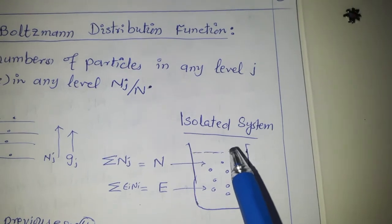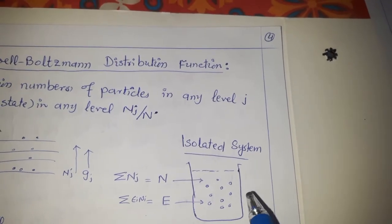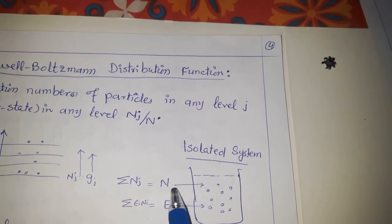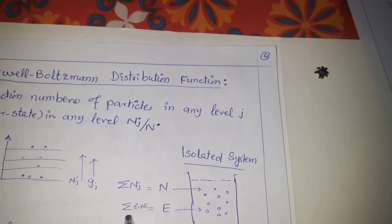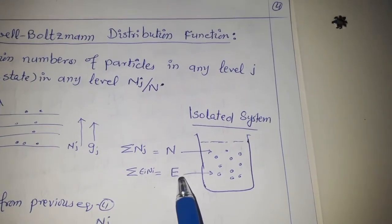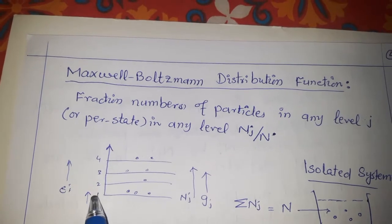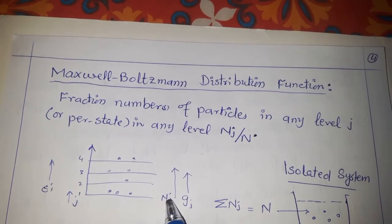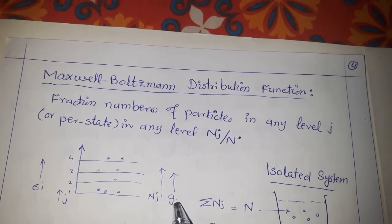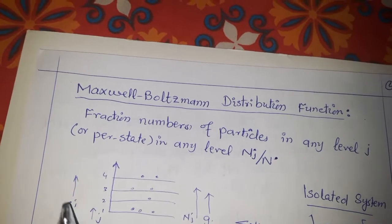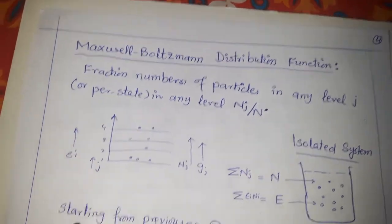Consider an isolated system. In thermodynamics, an isolated system is any system in which there is no exchange of mass or energy. In this case, the total number of particles N equals the summation of nj, which is constant. The total energy of the system, summation of εi·ni, is also constant. The system consists of different energy levels j = 1, 2, 3... with particles distributed among them. The number of particles in each level can vary, but the total must remain constant. Similarly, the energy of a level is constant, but varies with the number of particles.